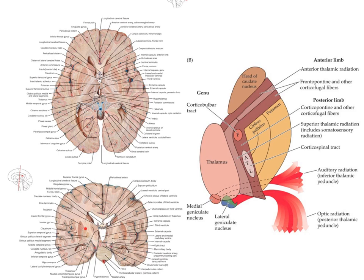The internal capsule is basically the condensation of the corona radiata in the cerebral hemisphere. In the hemisphere, a whole load of axons coming from the cortex converge together — or diverge if they're sensory — down onto this internal capsule. Despite the name 'capsule,' we can think of the internal capsule as a tract, a white matter tract within the brain hemispheres.